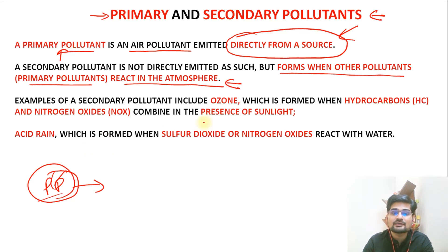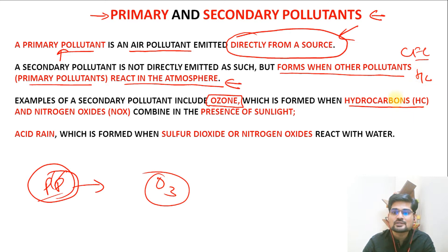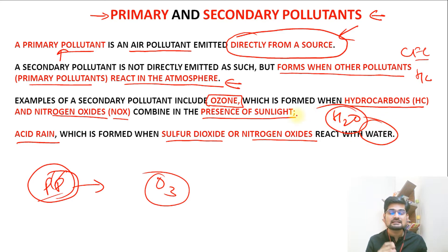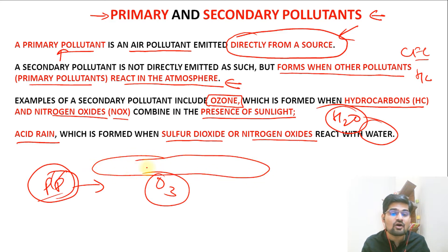Examples of secondary pollutants include ozone (O3) formation — we have discussed this in the atmospheric structure as well. Ozone forms when hydrocarbons and nitrogen oxides (NOx) combine in the presence of sunlight. Acid rain also forms when sulfur dioxide or nitrogen oxides react with water (H2O). These are the secondary pollutants formed from reactions of primary pollutants.